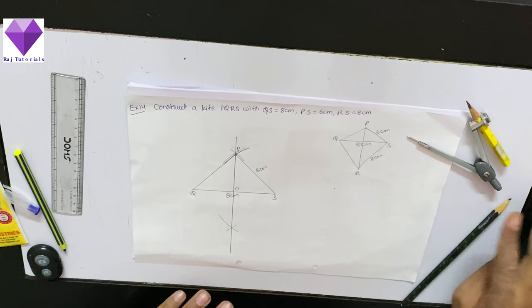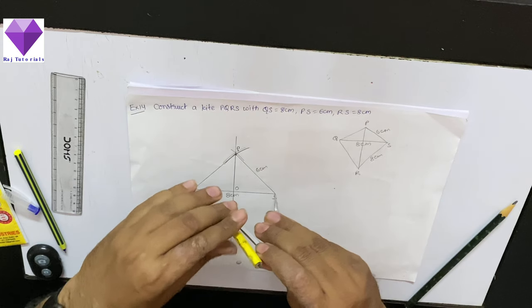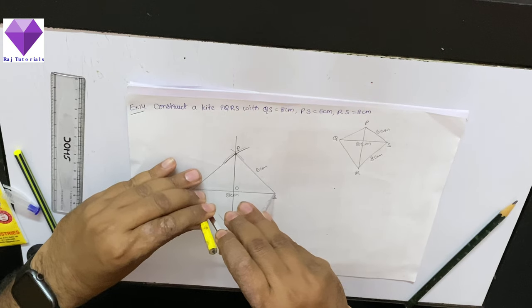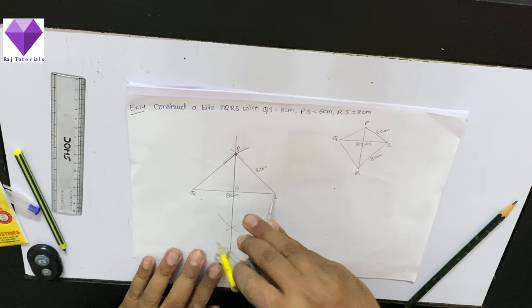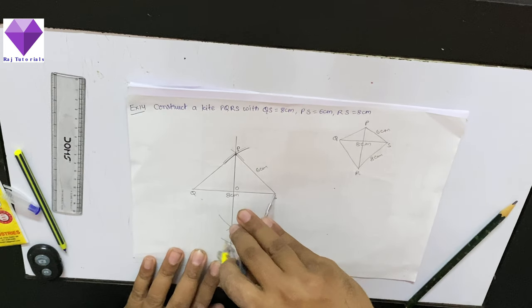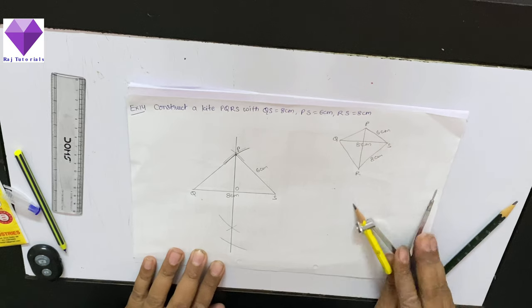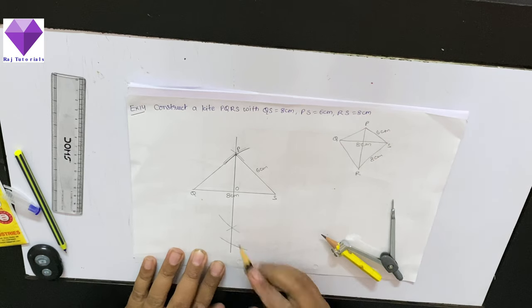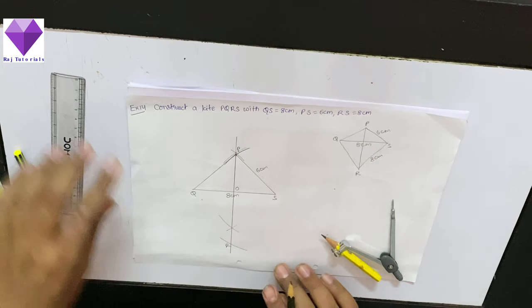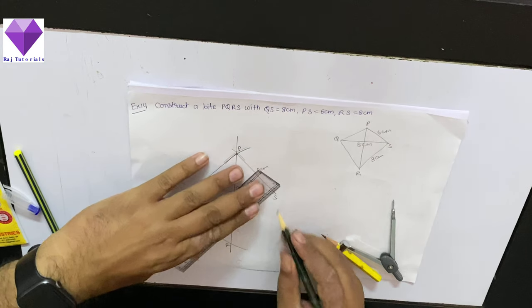QS was already 8 cm, so I am measuring that only. And with that, I am marking an arc here in the bottom side to get R point. Now, I will join QR and RS.